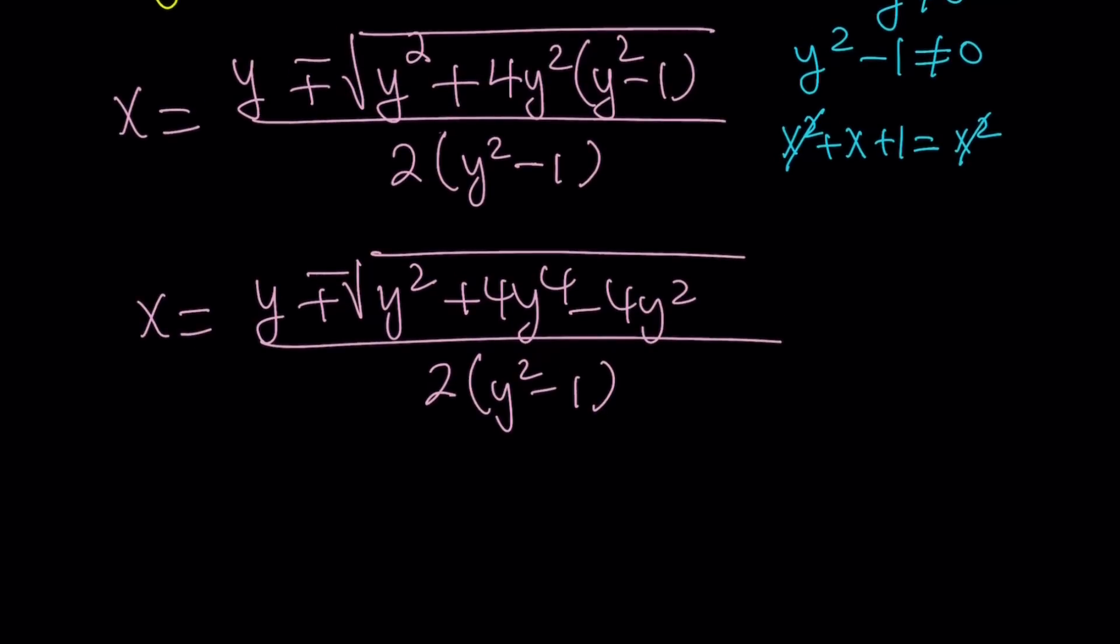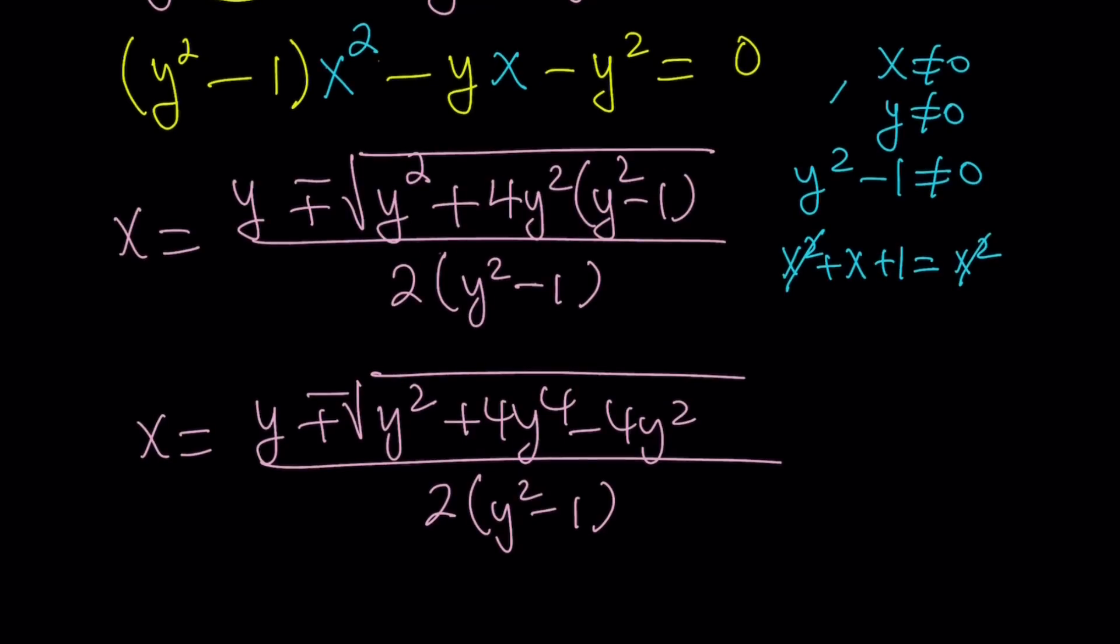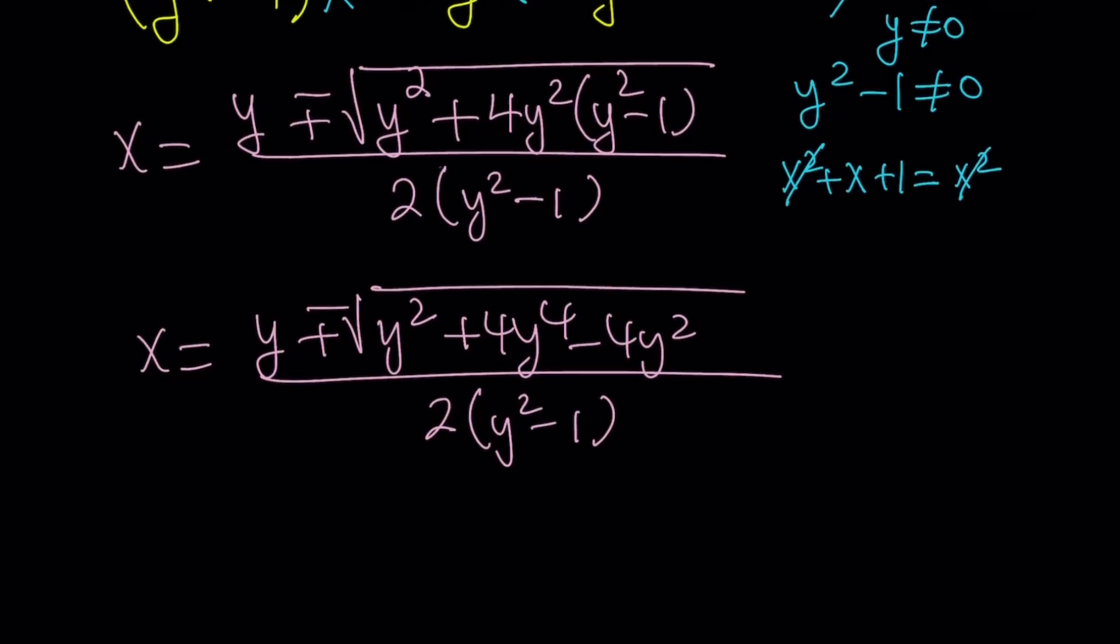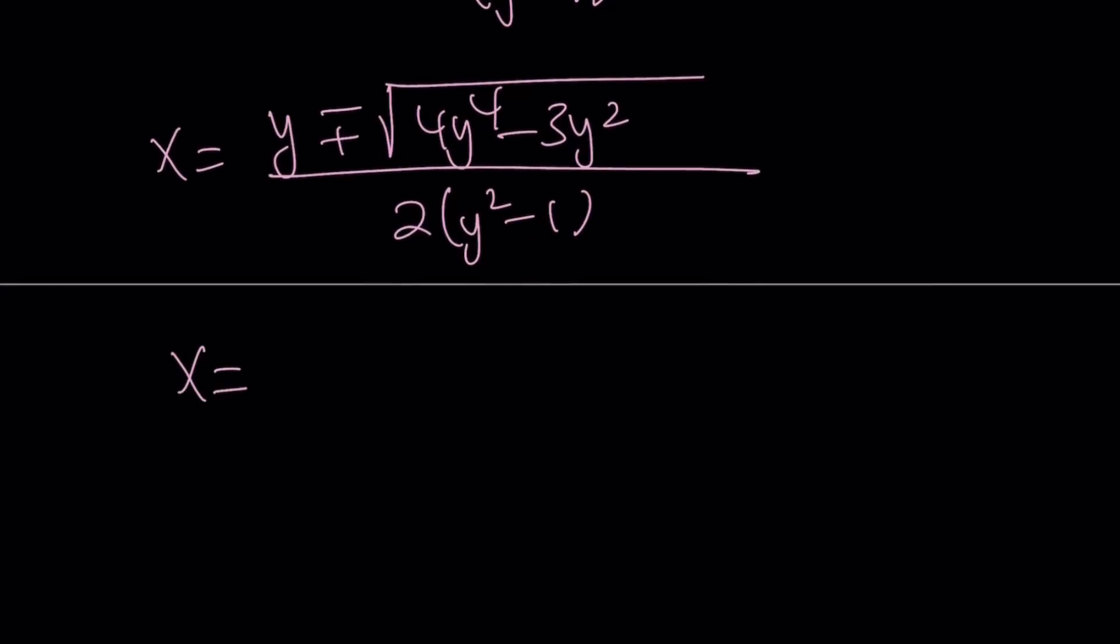That is divided by 2 times y squared minus 1. Let's simplify inside the radical a little bit more. Y squared minus 4ac. Actually, that's correct. So, we combine like terms. Y squared minus 4y squared is just going to be negative 3y squared. So we can write it like this. y plus minus. First of all, I'm going to write the 4y to the fourth and then subtract 3y squared. Obviously, we can take out a y squared here. If you take out a y squared, which becomes a y outside, you get 4y squared minus 3 inside the radical.